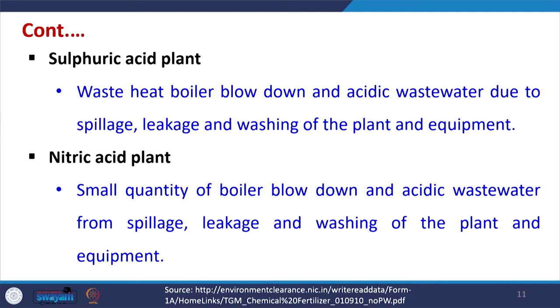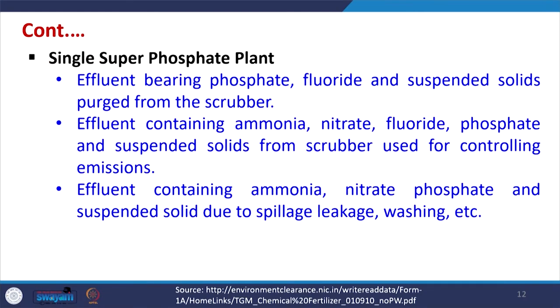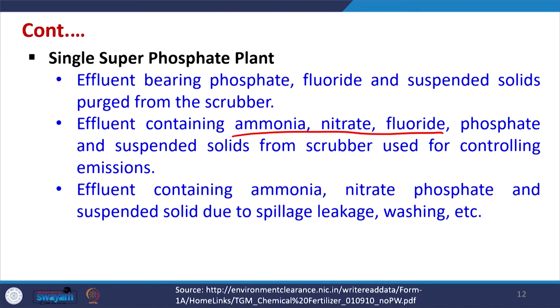In the sulphuric acid plant, waste heat boiler blowdown and acidic wastewater due to spillage, leakage, and washing from plant and equipment may be present. For the nitric acid plant, small quantities of boiler blowdown and acidic wastewater from spillage, leakage, and washing are generated — both plants have very similar types of wastewater. In the single superphosphate plant, effluent containing phosphate, fluoride, and suspended solids from the scrubber may be generated, as well as effluent containing ammonia, nitrate, fluoride, phosphate, and suspended solids from emission-control scrubbers.